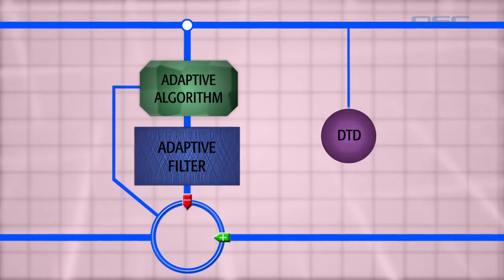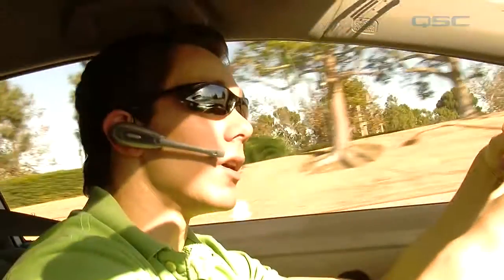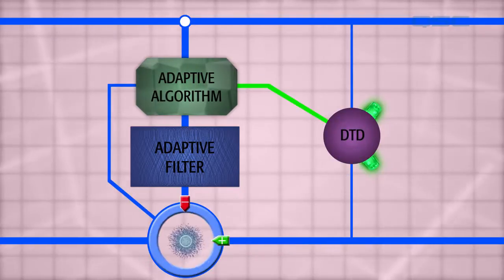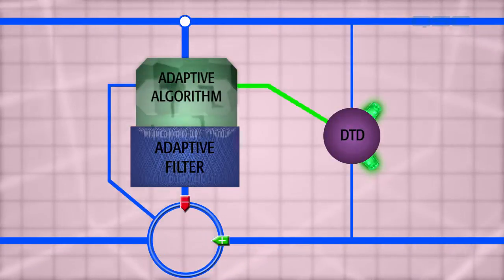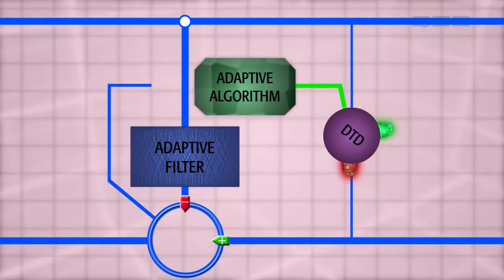This is a job for the double-talk detector or DTD. The DTD listens to both the far-end and near-end microphones and determines if someone is speaking. If the far-end is speaking and the near-end is not, then it allows the adaptive algorithm to do its job of converging the adaptive filter to the room impulse response. In any other situation, the DTD will prevent the adaptive algorithm from working.